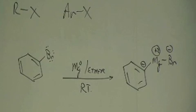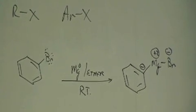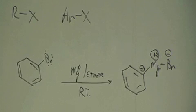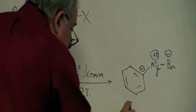You put the magnesium in between the carbon and the halogen. It sandwiches itself in between the carbon and the halogen to give you what's referred to as the Grignard reagent.